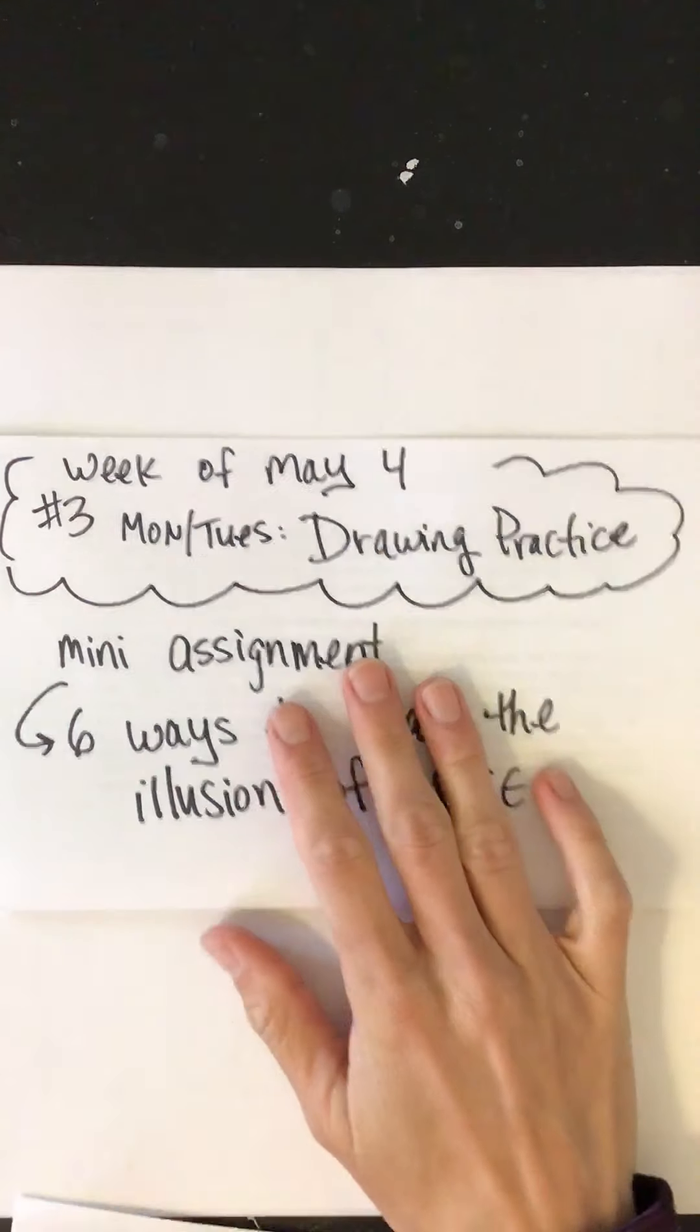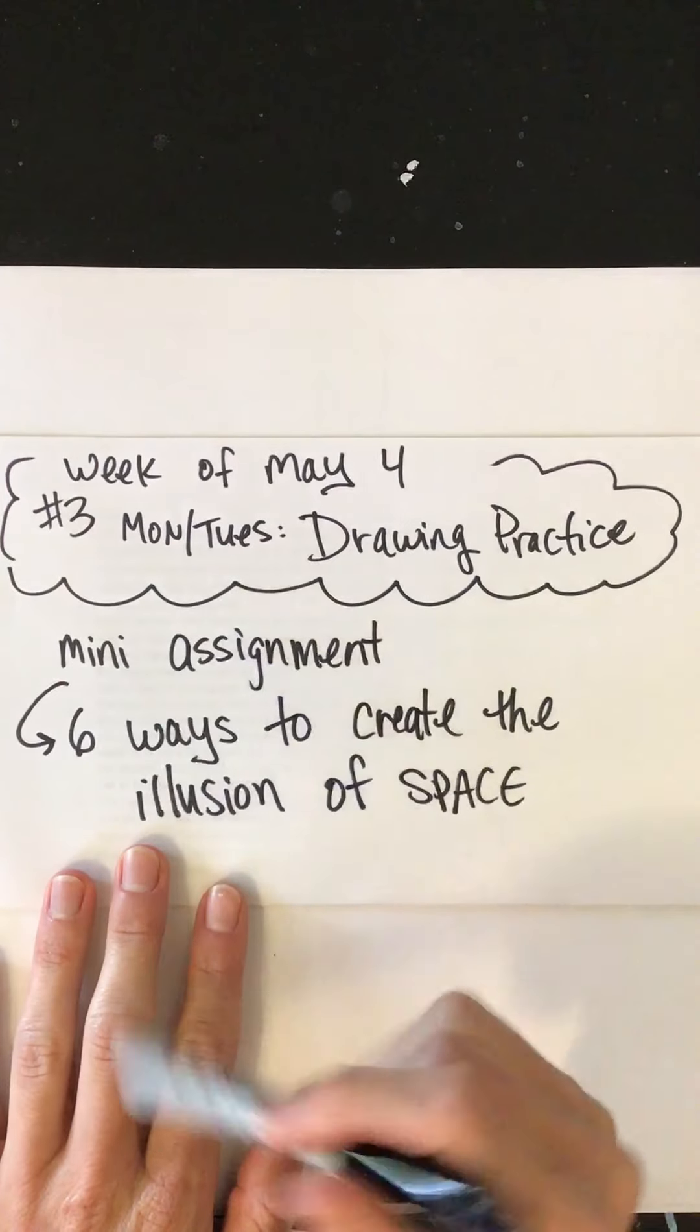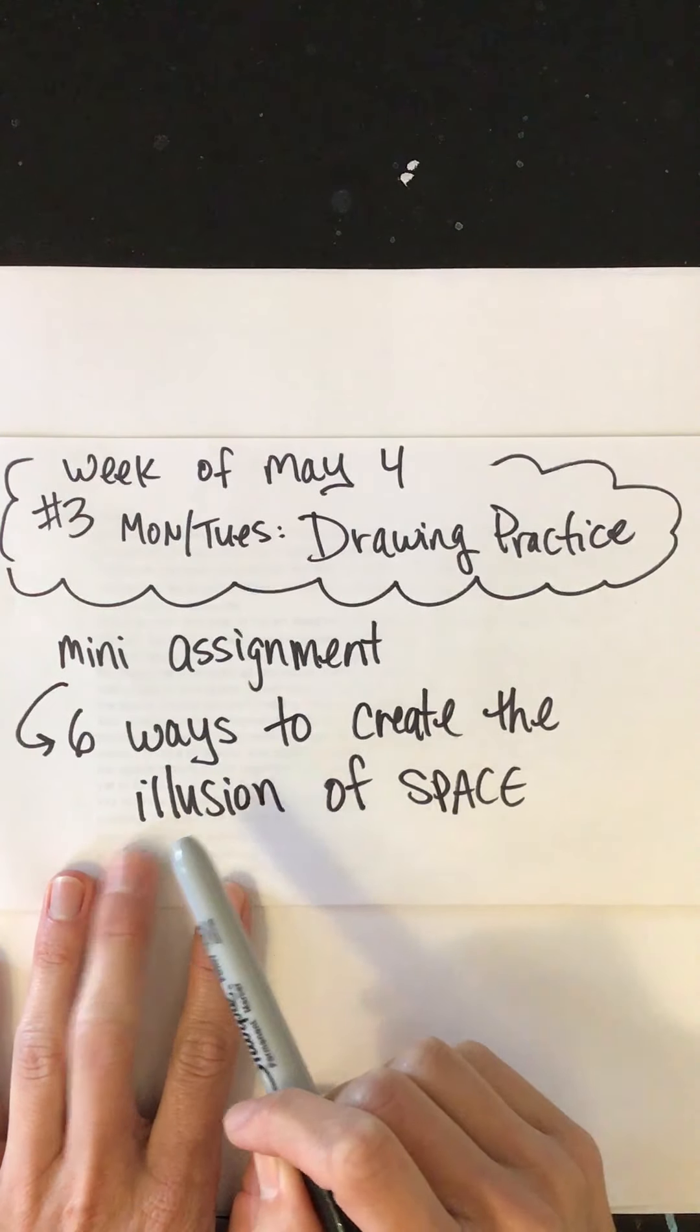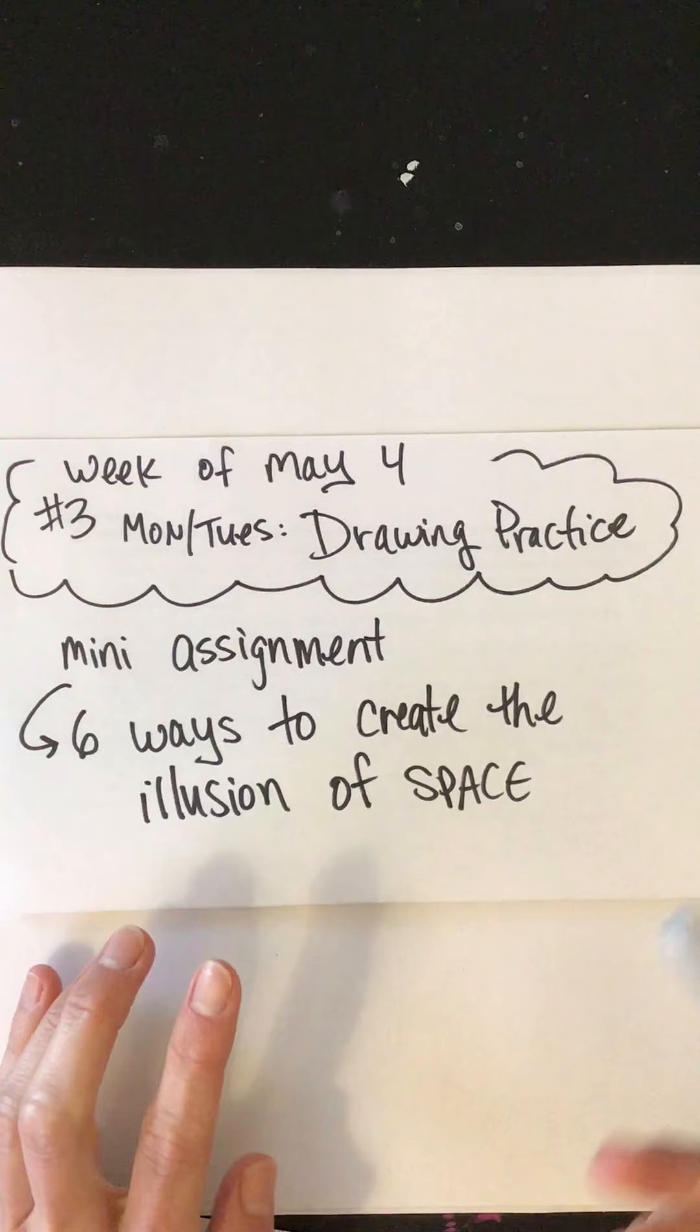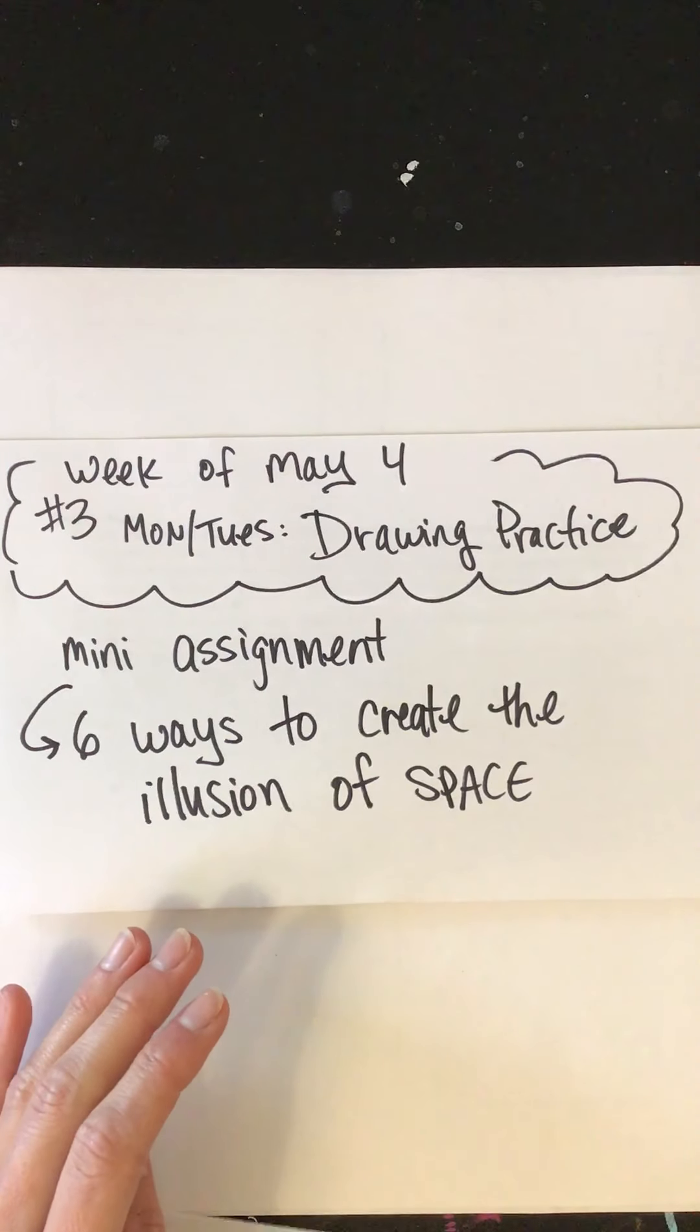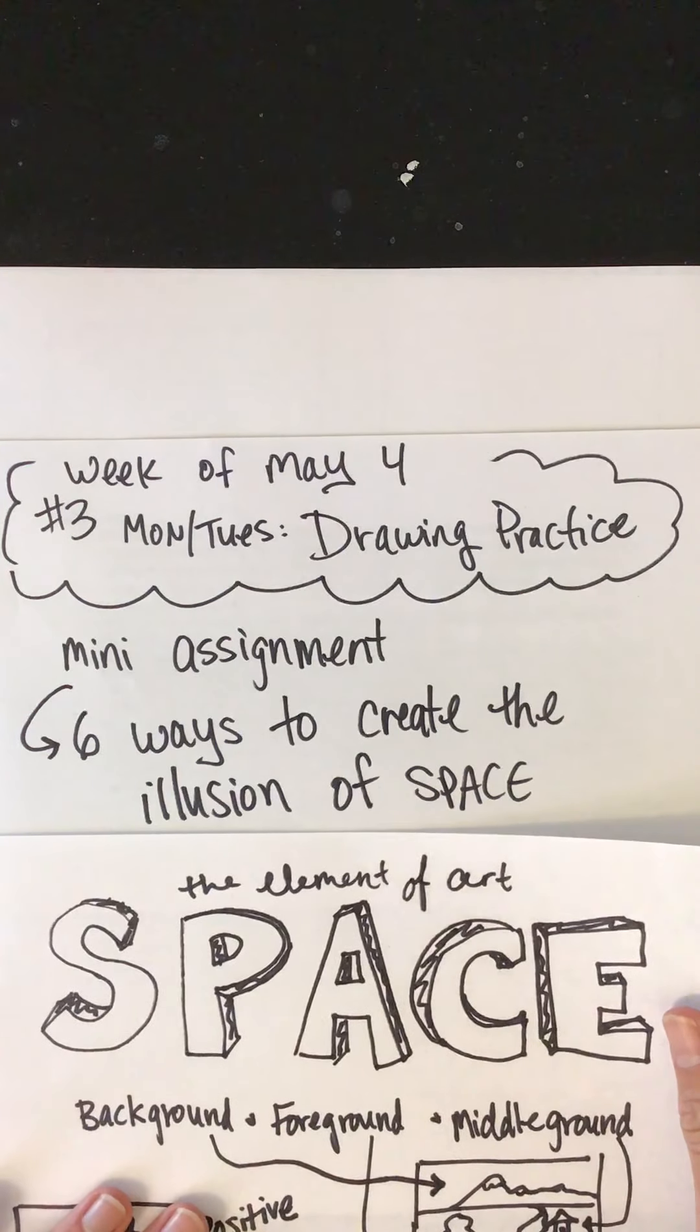All right, so here we are. This little mini assignment for the week of May 4th. We're gonna learn six ways to create the illusion of space, and the illusion is just, it's not really there, right? Because on paper we're just drawing it to make it look like it, but it's not actually real life. That's what illusion means.